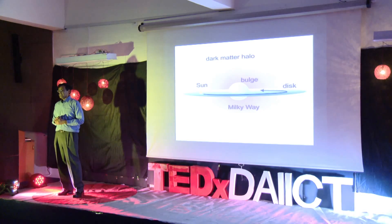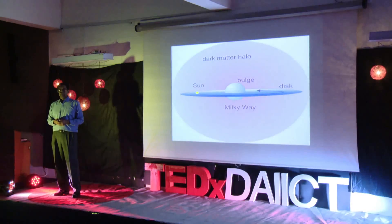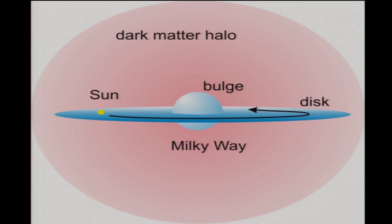Such weakly interacting massive particles, of course, go by the name of WIMPs. Now how do you catch a WIMP? In this diagram, you see the dark matter halo with the Milky Way galaxy centrally situated — the central bulge and the disk going around it. The solar system is in the disk, going around the galaxy, and while it does so, it is also going through the dark matter halo. So if you have sensitive detectors on the earth, in principle you could detect the dark matter.